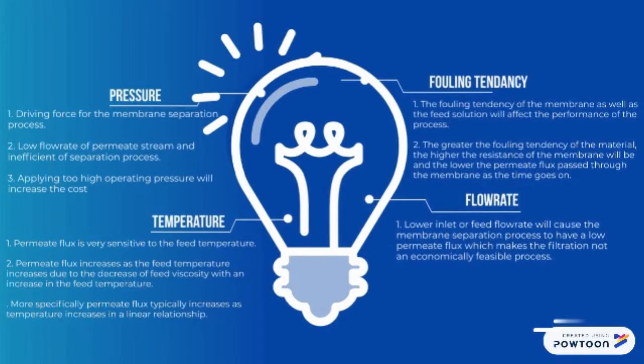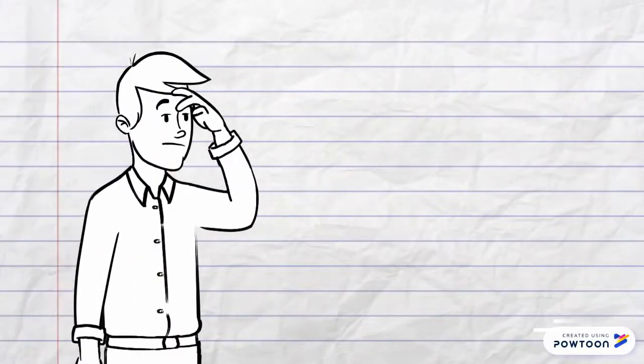Finally, the fouling tendency. The fouling tendency of both the membrane and the feed solution will affect the performance of the process. The greater the fouling tendency of the material, the higher the resistance of the membrane will be, and the lower the permeate flux through the membrane as time goes on.